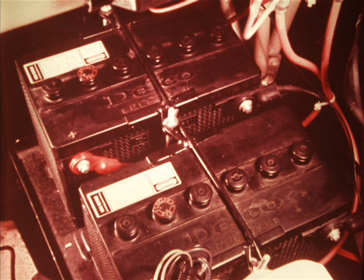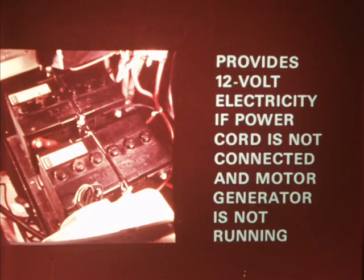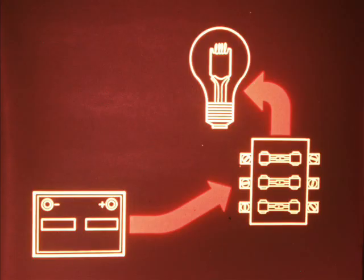The third source of electricity for the motor home is the batteries. One supplies power for the 12 volt electrical circuitry in the living area. Another supplies 12 volt power to the automotive and chassis circuits. And the third provides cranking power for the motor generator. The living area battery provides 12 volt electricity if the motor home is not plugged into an external connection and if the motor generator is not running. When the battery is supplying electricity, current flows from the battery to the automotive type fuses located in the electrical compartment and on to the various 12 volt electrical components.